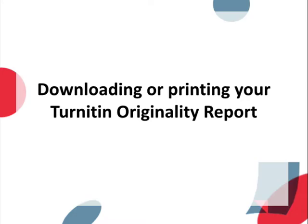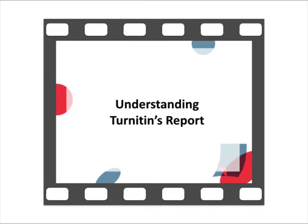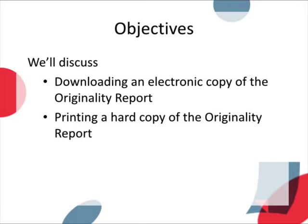In this video we are going to take a look at getting a copy of the originality report for your paper to keep for your own records or to share with a collaborator or supervisor. If you missed it, the previous video, Understanding Turnitin's Report, covers how the similarity index is calculated and how the originality report is used to check for plagiarism. In this video we'll discuss downloading an electronic copy of the originality report and printing a hard copy of the originality report.